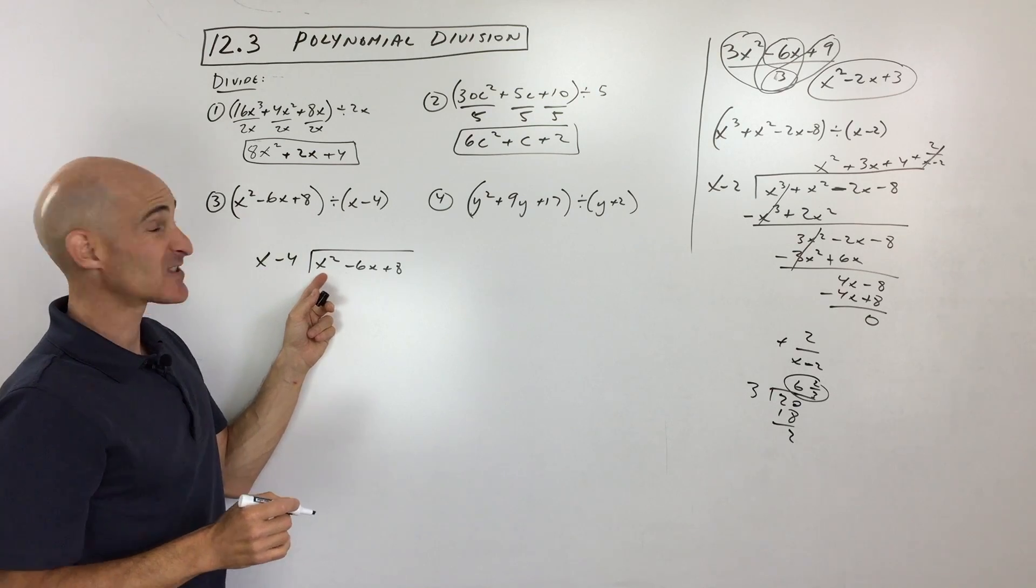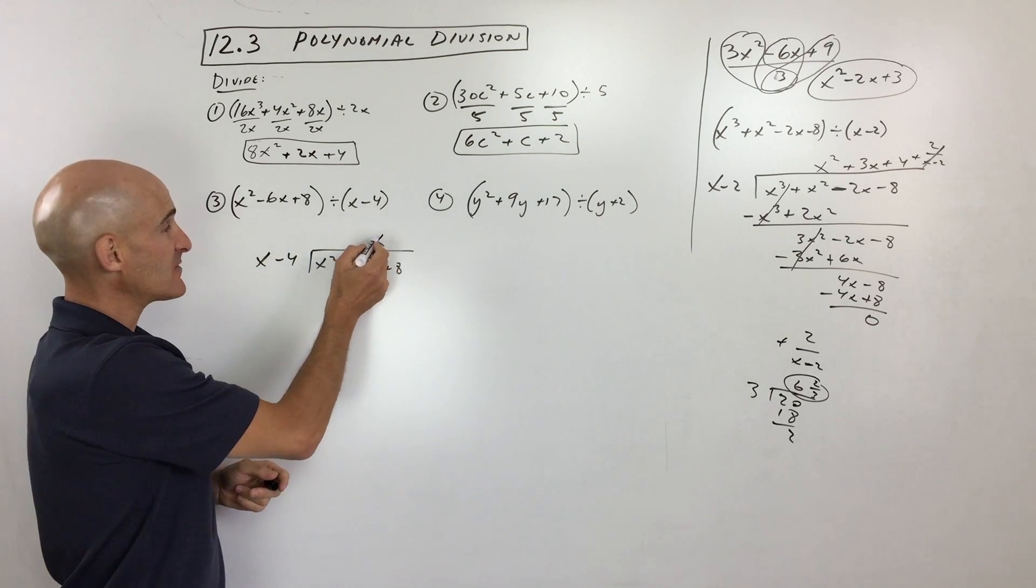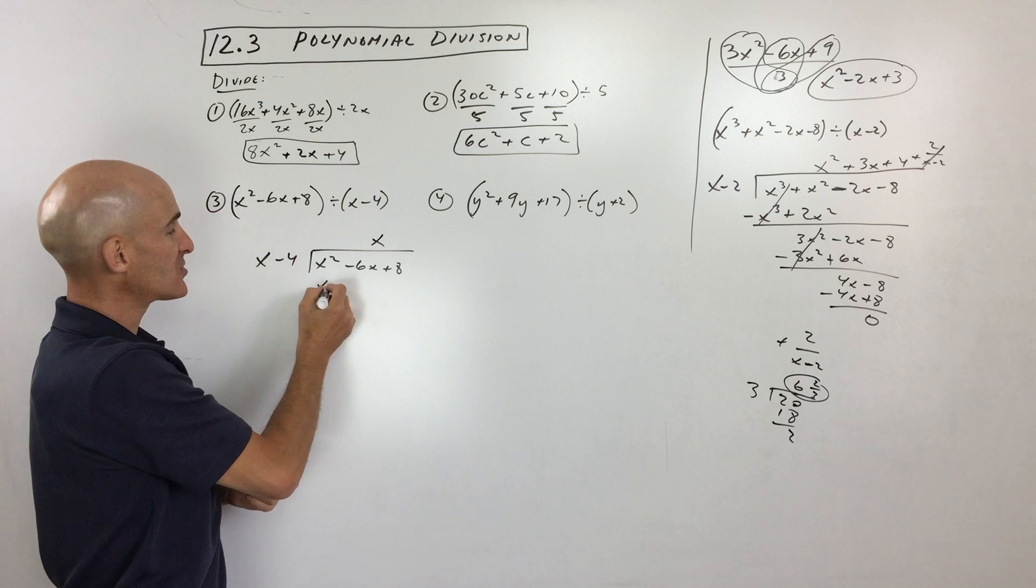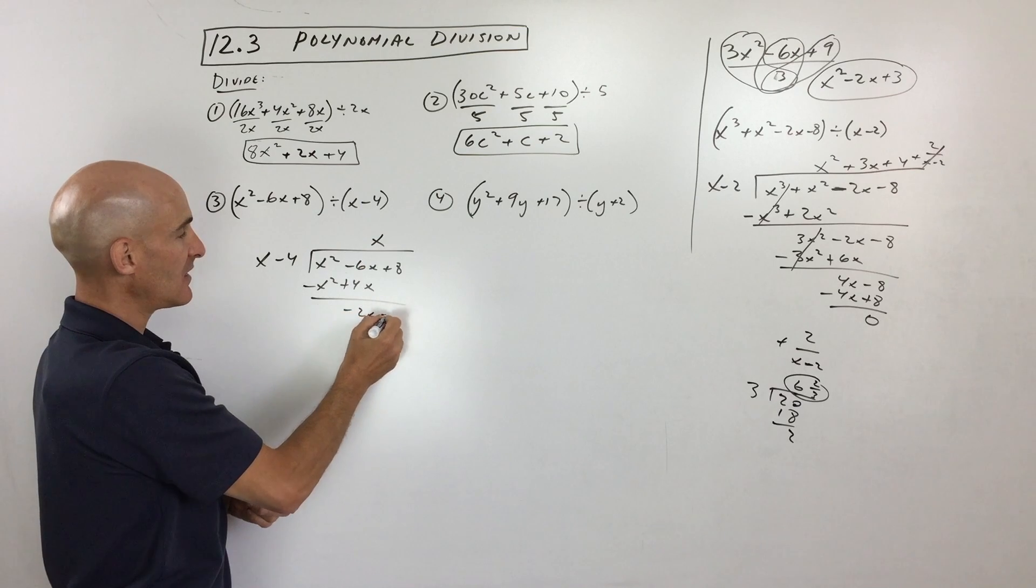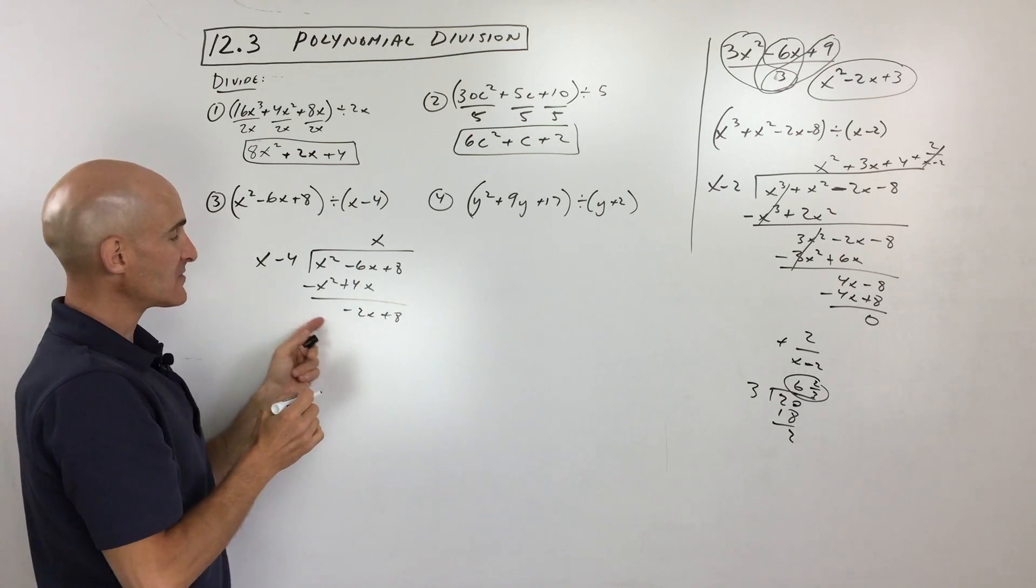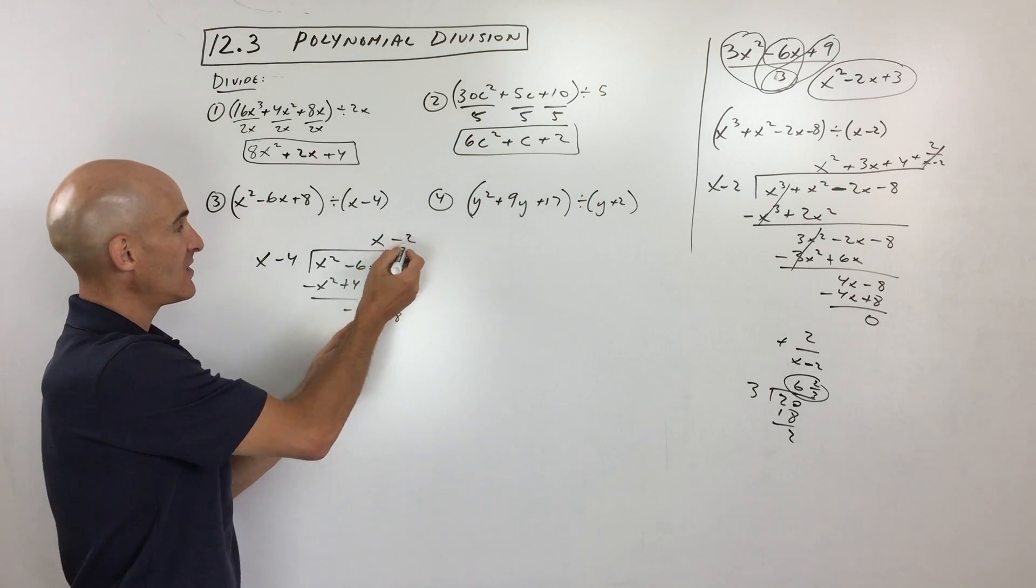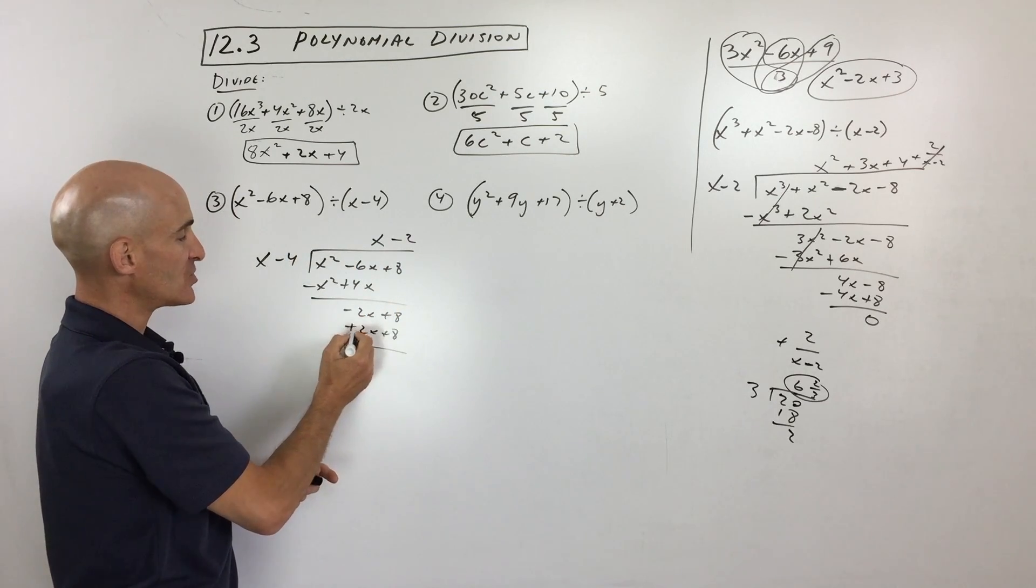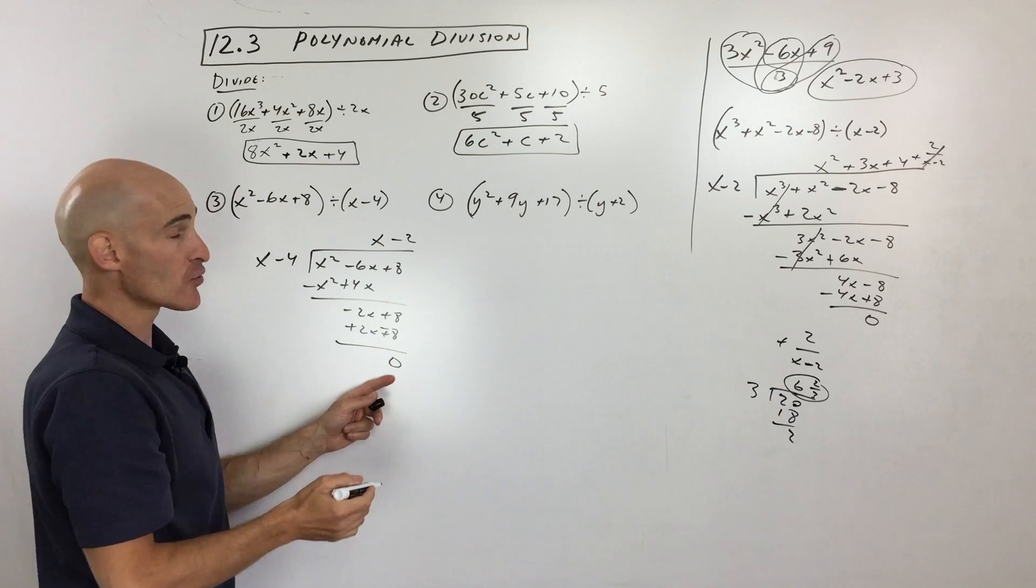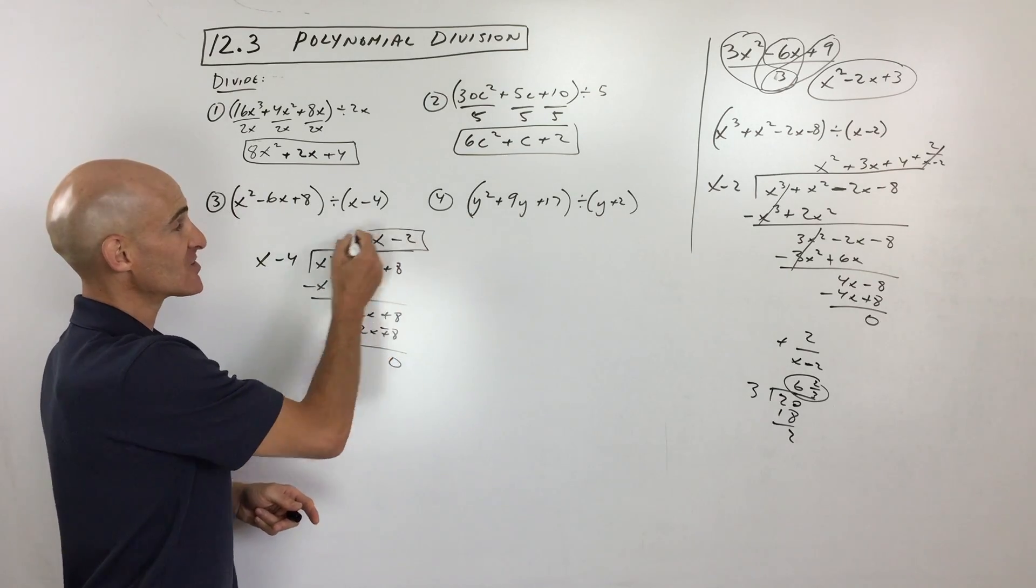How many times does x go into x squared? x times. And you can distribute that x to both these terms like so. Now we're going to change the signs to the opposite and add straight down. How many times does x go into negative 2x? Negative 2 times if we distribute and then we change the signs to the opposite and we add, we get 0 remainder.